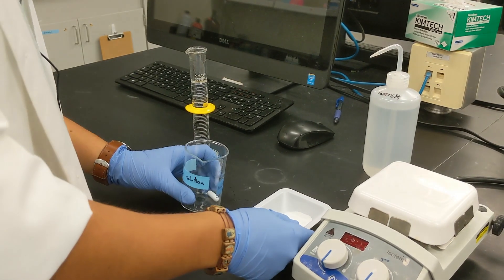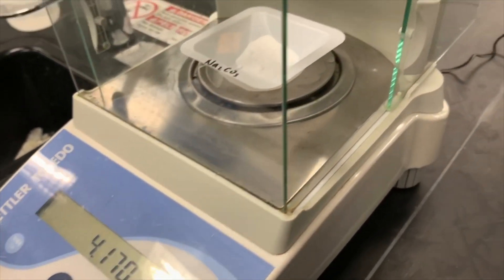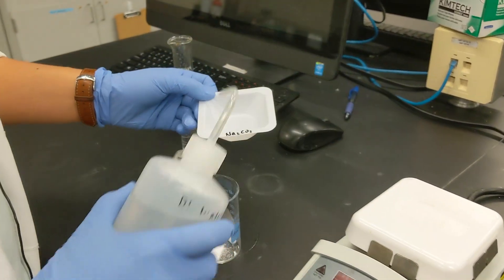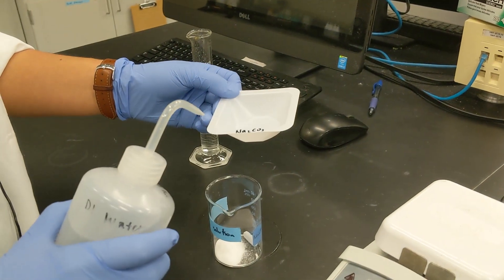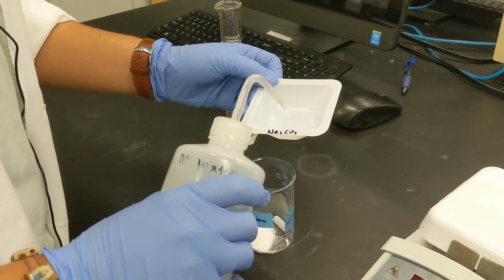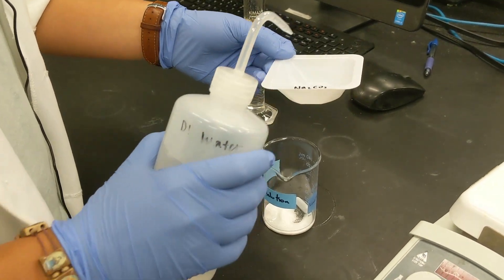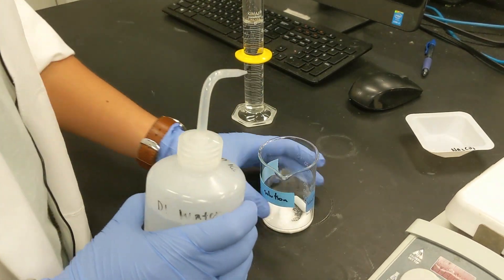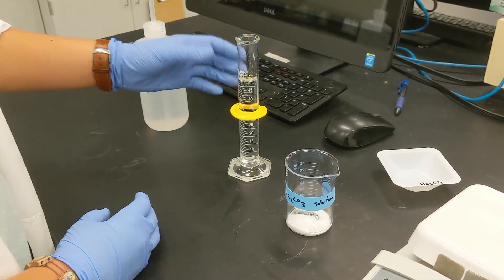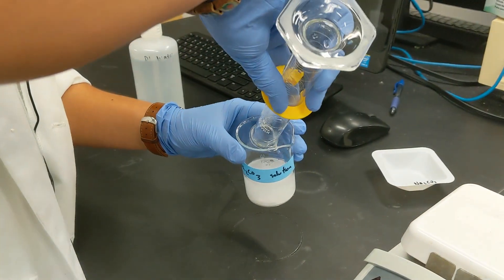Now all we're going to do is add our sodium carbonate from the weigh boat into this beaker and then we want to quantitatively transfer it. So that means there's still some solid in this weigh boat, so using this DI bottle we can squeeze out some and get some of the remaining solid into the beaker. Then we're going to add our 50 milliliters of DI water from this graduated cylinder and add it to the beaker.